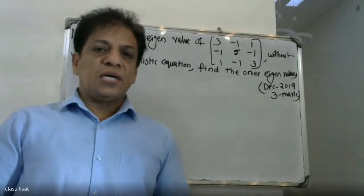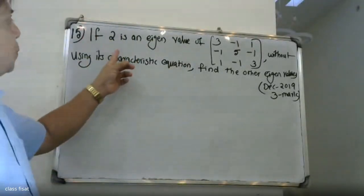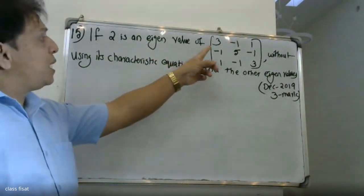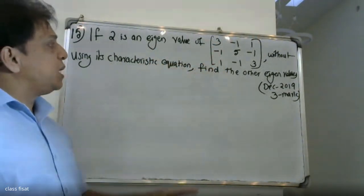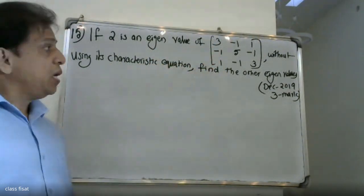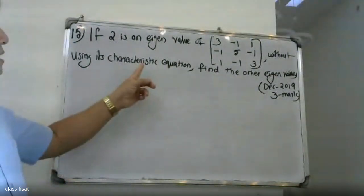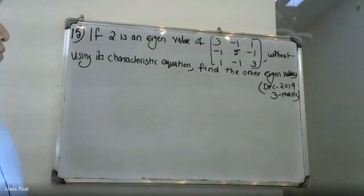Good morning, students. If 2 is an eigenvalue of the matrix [3, -1, 1; -1, 5, -1; 1, -1, 3], without using its characteristic equation, find the other eigenvalues.